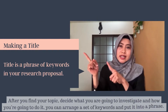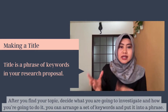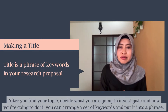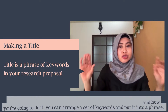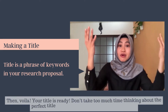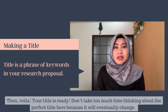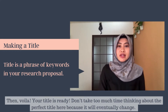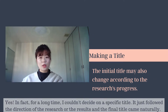Now let's get back to title and abstract. After you find your topic, decide what you are going to investigate and how you're going to do it, you can arrange a set of keywords and put them into a phrase — and voila, your title is ready. Don't take too much time to think about the perfect title because it will eventually change. In fact, for a long time I couldn't decide on a specific title; it just followed the directions of the research or the results, and the final title came naturally.